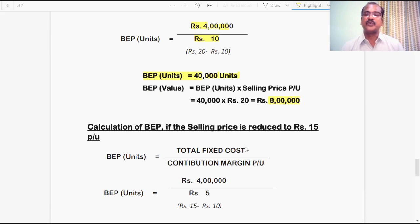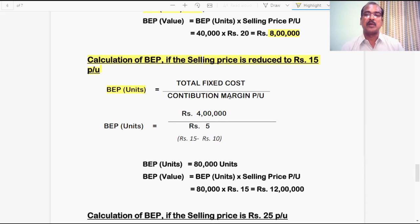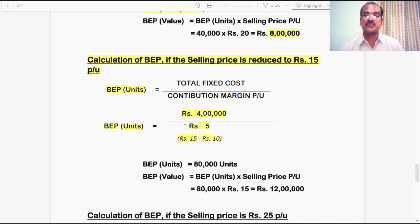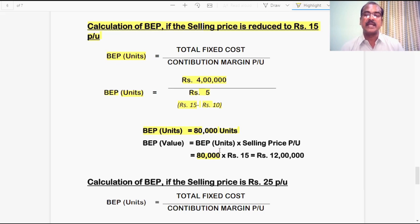In revised Situation 1, the selling price is reduced to ₹15 per unit. Total fixed cost remains unchanged at ₹4 lakhs. The new contribution margin per unit is ₹15 minus ₹10 (variable cost unchanged) equals ₹5. Therefore, BEP in units equals 4 lakh divided by 5, giving 80,000 units. In terms of value, 80,000 units multiplied by the new selling price ₹15 gives ₹12 lakh rupees as the breakeven point in value for Situation 1.